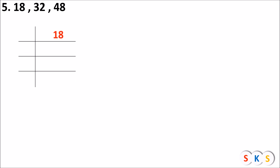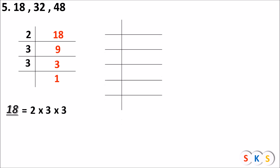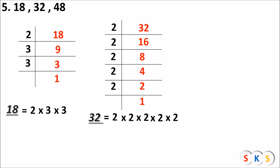Next question: Find SCF of 18, 32, and 48. Prime factor of 18: 18 ÷ 2 = 9, 9 ÷ 3 = 3, 3 ÷ 3 = 1. So prime factor of 18 is 2 × 3 × 3. Prime factor of 32: 32 ÷ 2 = 16, 16 ÷ 2 = 8, 8 ÷ 2 = 4, 4 ÷ 2 = 2, 2 ÷ 2 = 1. So prime factor of 32 is 2 × 2 × 2 × 2 × 2.